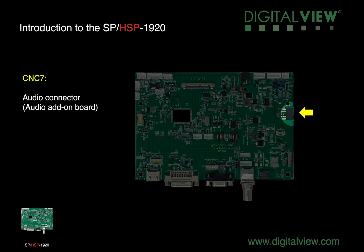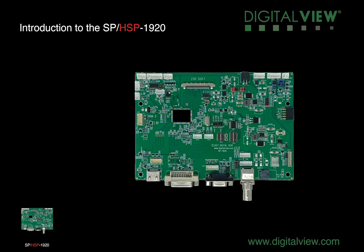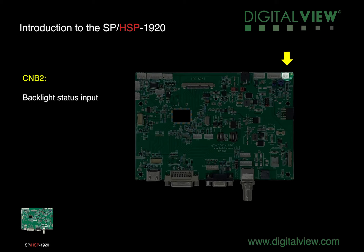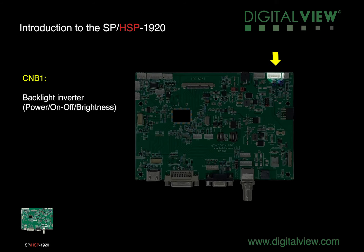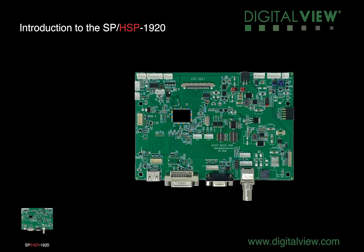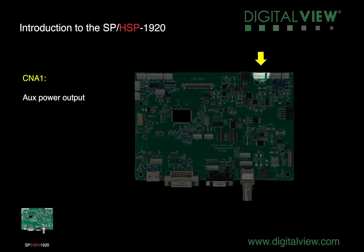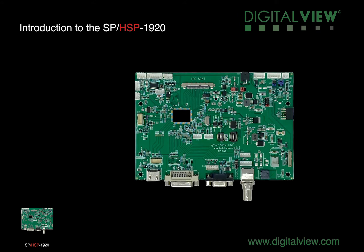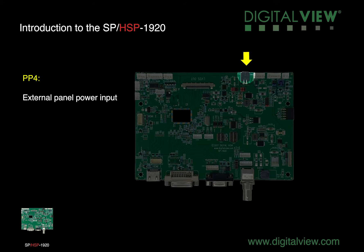CNC7 is the audio connector and you can connect the audio add-on board to this. CNB2 is for the backlight status input. CNB1 is for the backlight inverter control for power, on-off and brightness. CNB1 is for the auxiliary power output. PP4 is for the external panel power input.